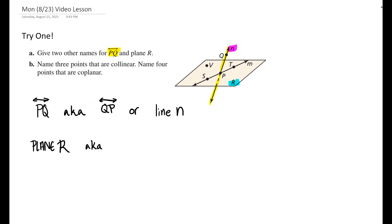R is not a point on the plane. It is a label for the plane. So we can call it plane R. How else can we call this plane? Remember, to call a plane, you must use three points NOT on the same line.